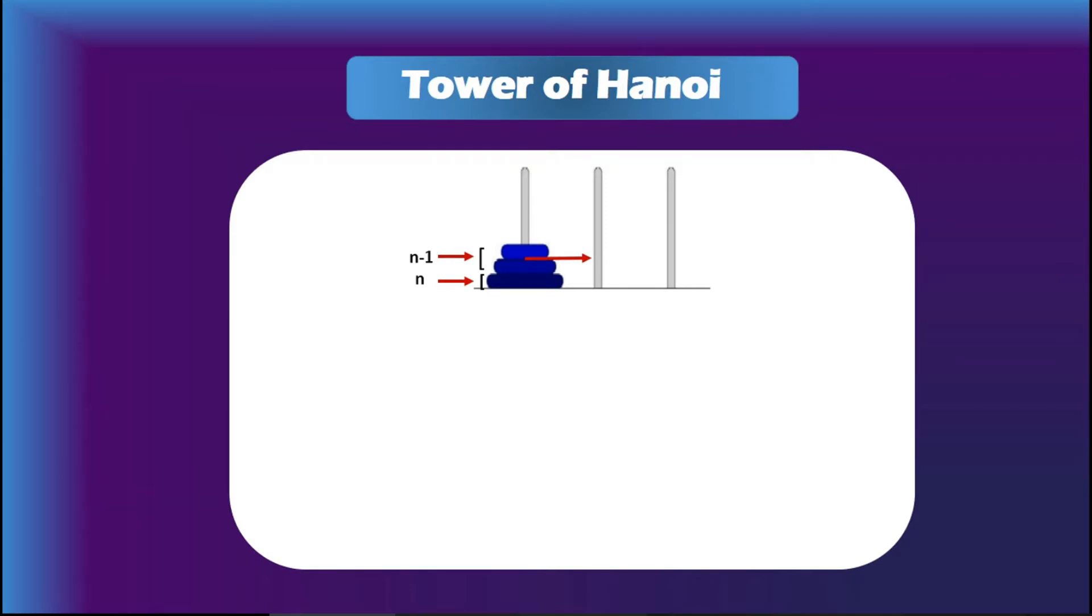Then the bottom disc will be uncovered, so we can move it to rod 3. After that, n minus 1 discs can be moved to the top of the third rod, which will cost s_{n-1} moves again.